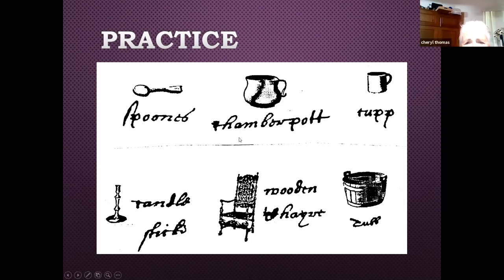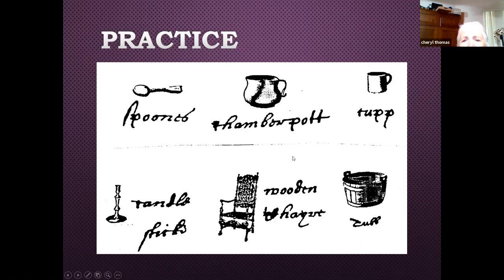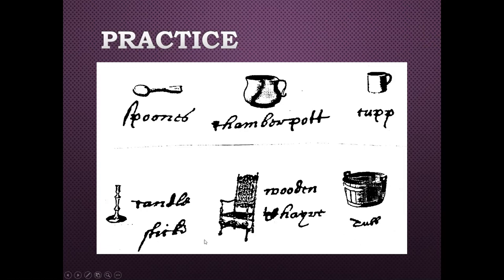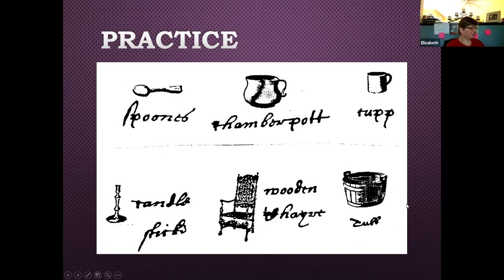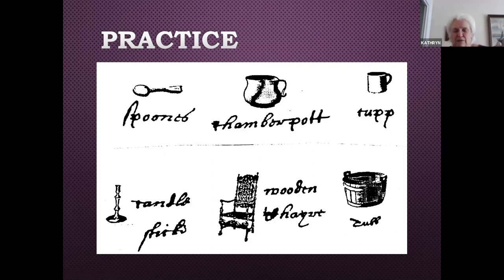That next one is the chamber pot — it looks like a big teacup, which is what they looked like. Notice on a lot of these that the spelling really differs at the end of the word. Here's a cup, then a candlestick — S's get really stylized and tough to figure out. Any idea what this says? Wooden chair. And the last one — tub. The chair is spelled C-H-A-Y-R-E. It's like a crossword puzzle — you look at the letter shapes and narrow down what it can be.